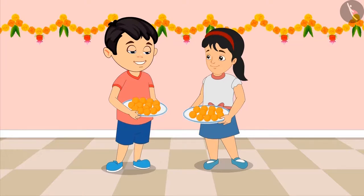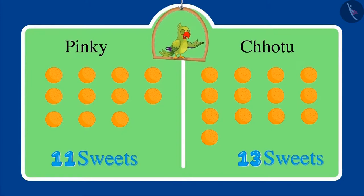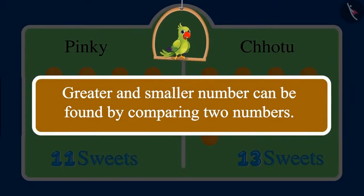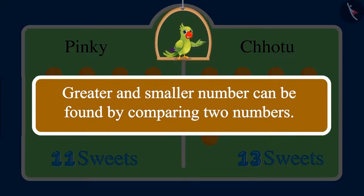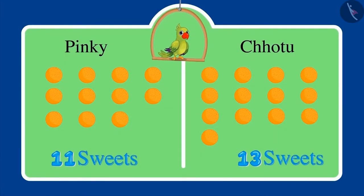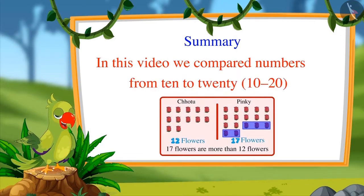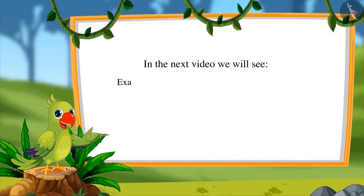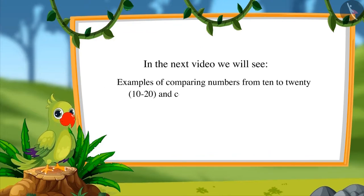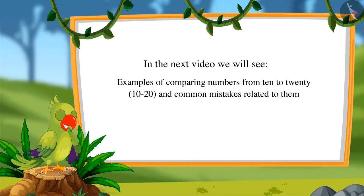So, children, in these examples you saw how Pinky and Chotu compared two numbers and found out which number is greater. You can also compare the number of such objects around you, right? Good. That is all for today. In this video, we compared numbers from 10 to 20. In the next video, we will see some more examples of comparing these numbers and some common mistakes related to them. Till then, bye friends.